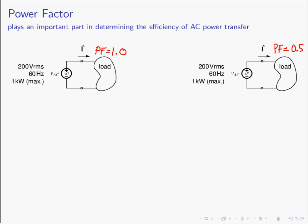Let's do an example to motivate our discussion. We have a load operating at a power factor of 1.0, so it's a purely resistive load. The utility is providing energy at 200 volts, it's a 60 hertz system, and the electric utility has the ability to only generate a kilowatt.